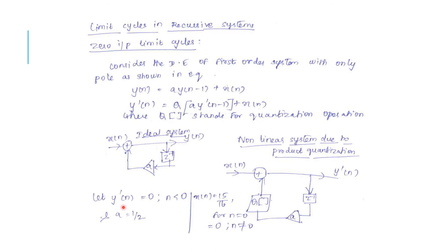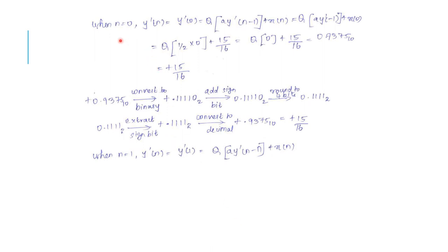Let us consider an example using signed magnitude representation for binary product. Let the product be quantized to 4 bits excluding the sign bit by upward rounding. In this case, y'(n) = 0 for n < 0, a = 1/2, and x(n) = 15/16 for n = 0 and 0 for n ≠ 0. Substituting n = 0 into the equation y'(0) = Q[a·y'(−1)] + x(0).